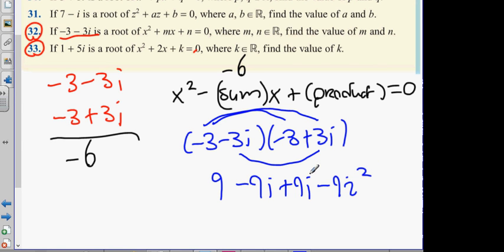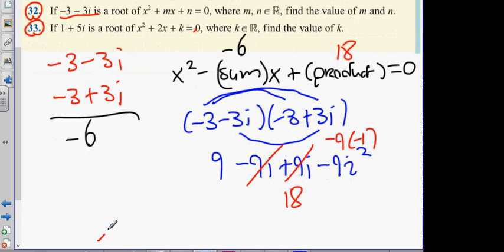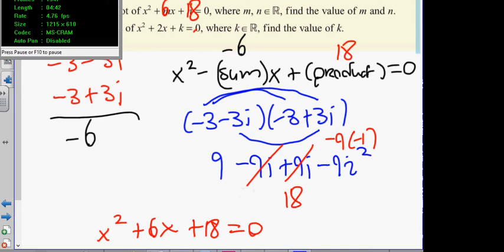So, what do you get? Minus 9i plus 9i? Zero. Minus 9 times minus 1? Nine. Nine plus 9? Eighteen. So, the answer to this is going to be x squared... What's minus minus 6? Plus 6x and 18. What does that mean about the letters? N is 6. N is 18.